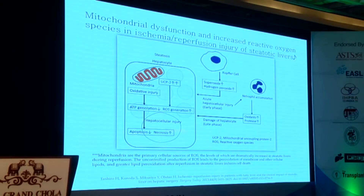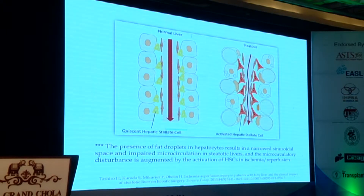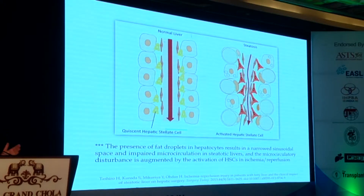A study from Japan examined the mechanisms in the steatotic liver, involving reactive oxygen species and neutrophil accumulation, which is a very important aspect of reperfusion injury. They also describe a third aspect of injury relating to compromised blood flow in the sinusoids with swollen hepatocytes and activation of stellate cells. So it's not just reactive oxygen species and neutrophil accumulation, but also impaired blood flow following reperfusion.